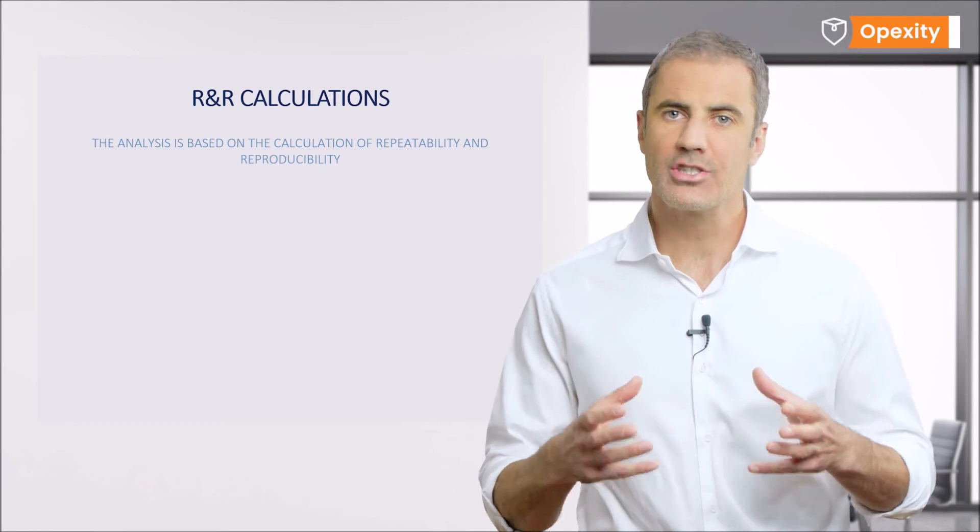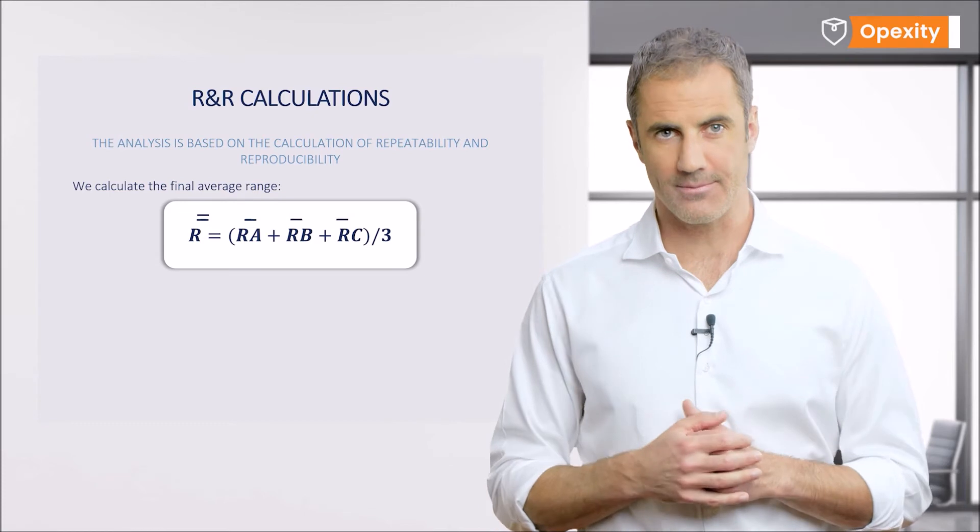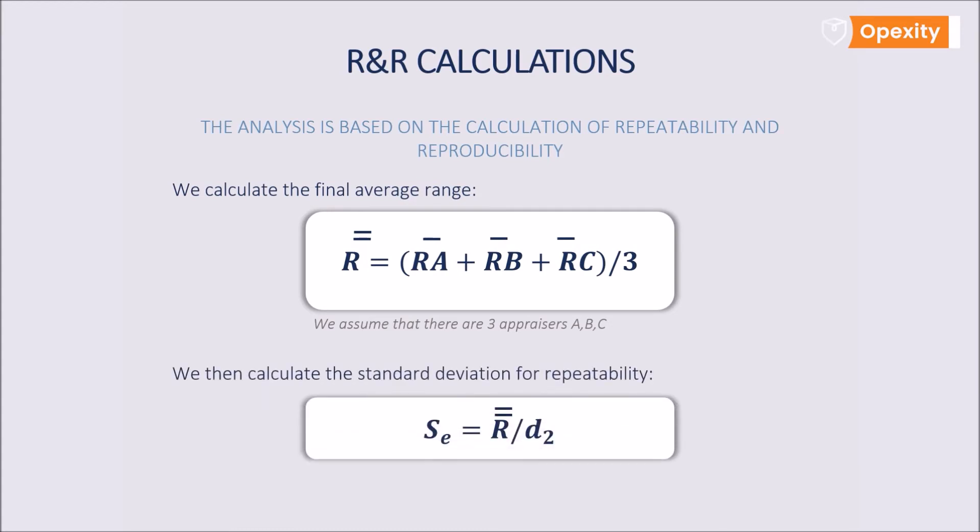Having the average of ranges as generated by each appraiser, we can calculate the final average of the range for the whole study. We add the individual ranges together and divide by their number. Now we will have to look at the statistical tables and calculate the value of the standard deviation SE for repeatability. This can be done by dividing the final average of the range by the parameter D2 that can be taken from the appropriate table. This is a normal distribution parameter that depends on the number of parts measured and the number of tests conducted.